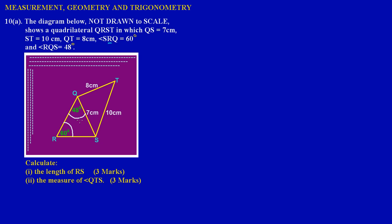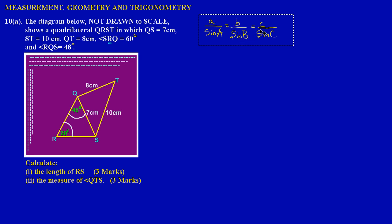To calculate part one — the length of RS — we're going to have to use the sine rule. As a refresher, the sine rule states that little a over sine big A, which is the angle opposite and across from the side, is equal to little b over sine big B, which is equal to little c over sine big C.